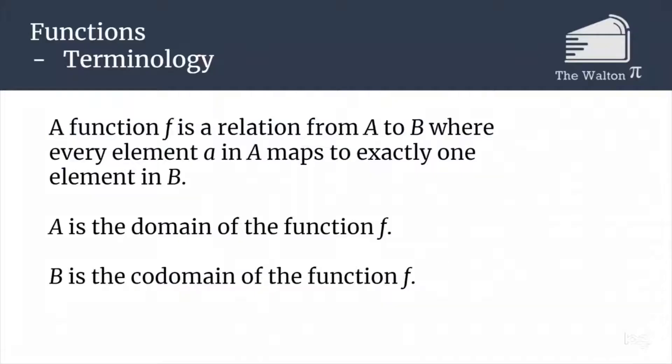To start off, let's establish some basic terminology about functions. A function is a special type of relation from A to B, where every element in the original set A maps to exactly one element in B. In this situation, A is going to be called the domain of the function and B is the codomain.